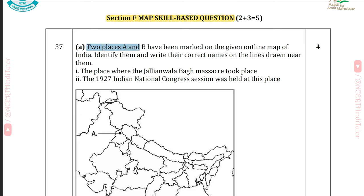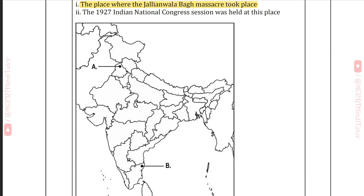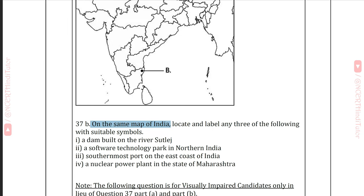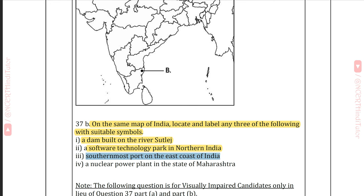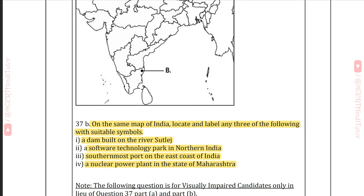Question 37A: Two places A and B have been marked on the outline map of India — identify them and write their correct names. First, the place where the Jallianwala Bagh massacre took place — Answer: Amritsar, Punjab. Second, the place where the 1927 Indian National Congress session was held — Answer: Madras. Question 37B: On the same map of India, locate and label any three of the following — a dam built on the river Sutlej: Bhakra Nangal Dam; a software technology park in Northern India: Noida; the southernmost port on the East Coast of India: Tuticorin; a nuclear power plant in the state of Maharashtra: Tarapur.